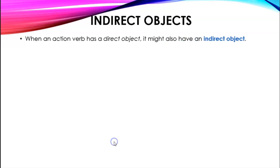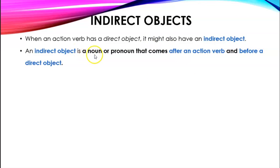Indirect objects. When an action verb has a direct object, it might also have an indirect object. An indirect object is the noun or pronoun that comes after the action verb but before the direct object.